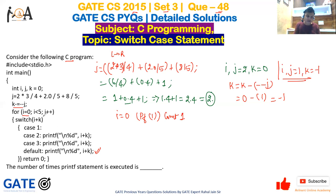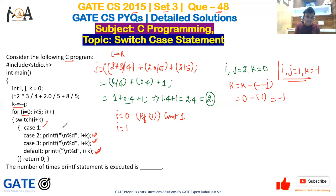i is incremented to 1. 1 is less than 5, so the loop continues. Switch evaluates i + k = 1 + (-1) = 0. Case 0 is matched, but there is no printf statement there. There is also no break, so execution falls through to case 1, case 2, case 3, and default.